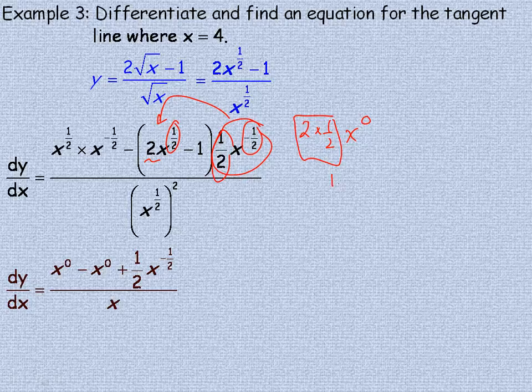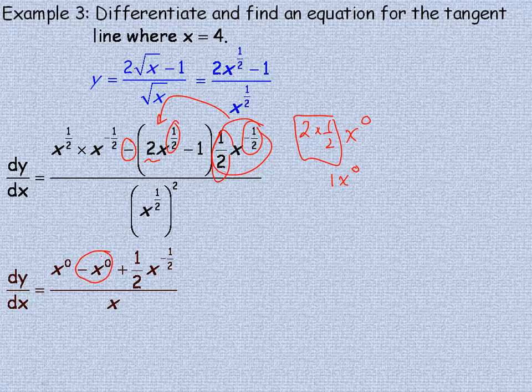So this is actually 1, you get 1x to the zero, and that means it's minus. So that's where the minus x to the zero, the second one comes from.